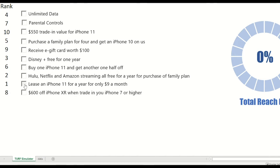Clicking on the most popular — leasing an iPhone 11 for a year for $9 a month — will appeal to 43% of the market. That is great. Now let's add the second most popular, offering Hulu and Netflix, and now I'm appealing to almost two-thirds of the market. With only these two promotions, I'm appealing to 62% of my market.